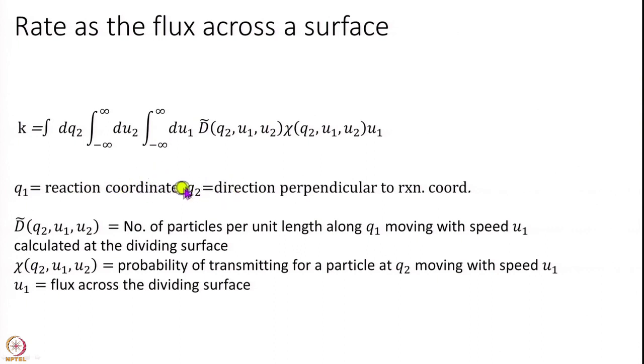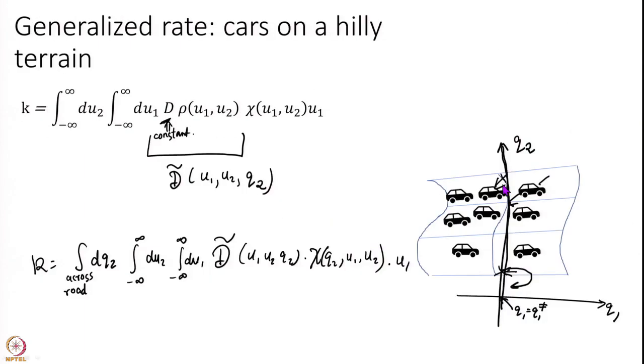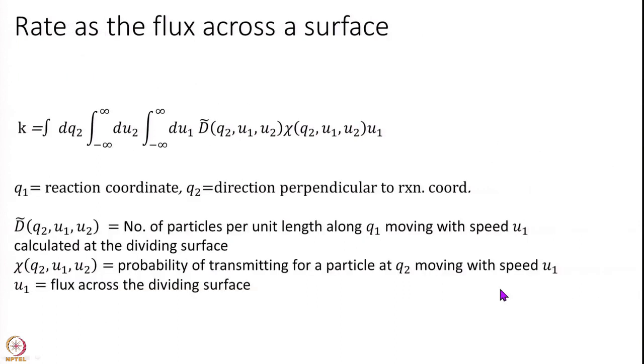We arrive at a much more general formula in 2 dimension. Remember roads are only 2 dimension, we are not making our cars go in more than 2 dimensions we are not flying around. But for this at least 2 dimension we have the as general of formula as we can get following Newton's laws. By way this is not quantum mechanical we still have positions and speeds. Here q1 is my reaction coordinate, q2 is a direction perpendicular to reaction coordinate. D tilde is a number of particles per unit length along the direction q1. If I am sitting here and along this direction is where d is measured. The number of cars in a unit length along the direction of q1 that is my d tilde at various values of q2 u1 and u2 and chi is the probability of transmitting if I am traveling at speed u1 comma u2 and u1 is the flux, telling me essentially the rate of transmission.